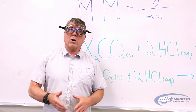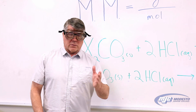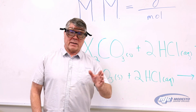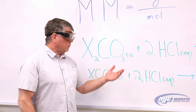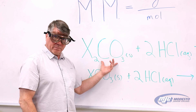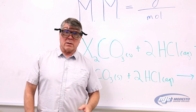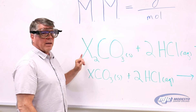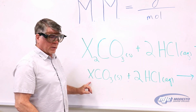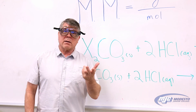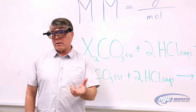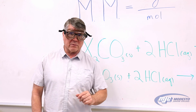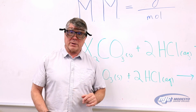So first of all, unknown carbonate — what does that mean? It means that it's an ionic compound and the anion is carbonate, CO₃²⁻. What's unknown about it is the identity of the cation — X just stands for whatever it could be. And because we don't know what the cation is, we don't know what the molar mass is. That's what we're going to find out: the molar mass of your unknown carbonate.